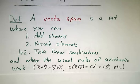There are eight axioms. Don't get hung up over the axioms. The point is you're allowed to add things, you're allowed to rescale things, you're allowed to take linear combinations, and everything you learned in elementary school about arithmetic still works.